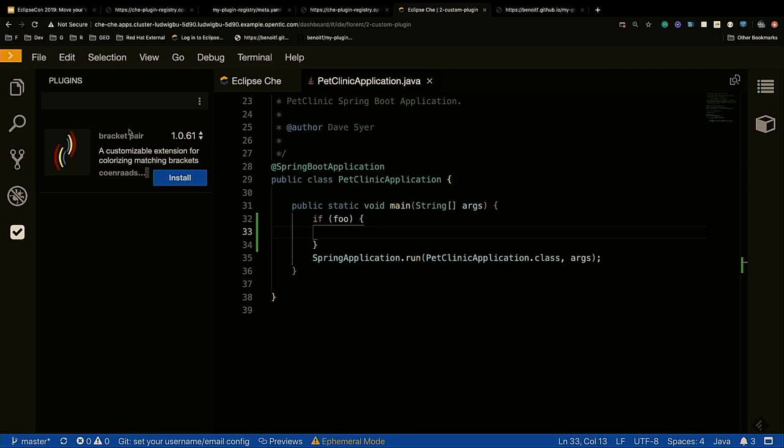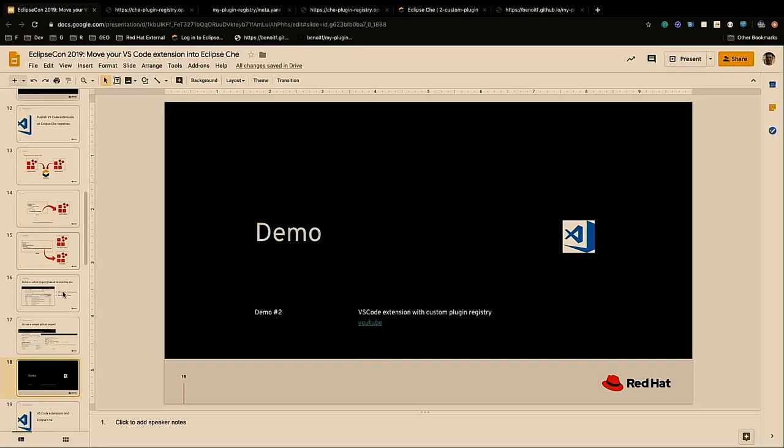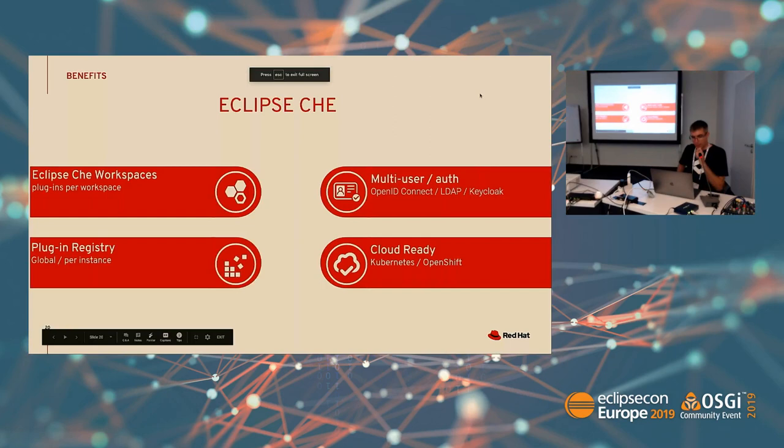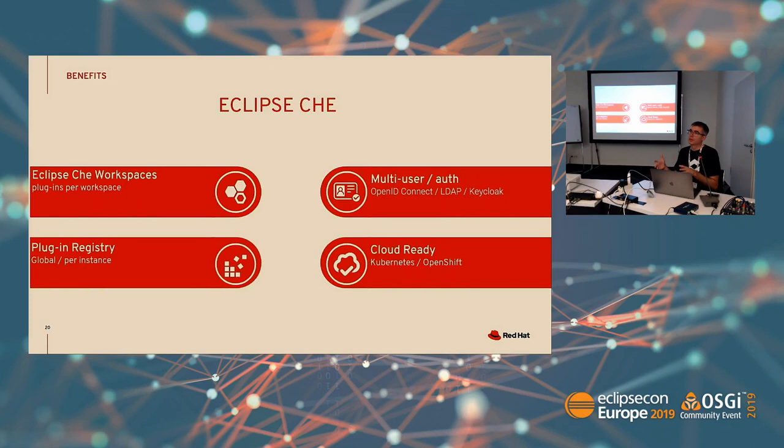Here I have shown an extension that uses pure TypeScript. But now I want to show you the benefits of using VS Code extensions inside of Eclipse Che — what you can do more. First, you can have different plugins per workspace. It means that in a Java workspace you can install all the VS Code Java extensions, and for Python you will just install the extensions for Python, et cetera.